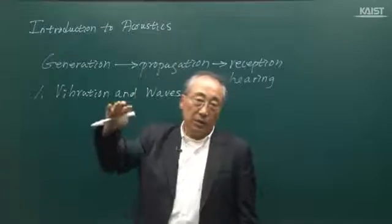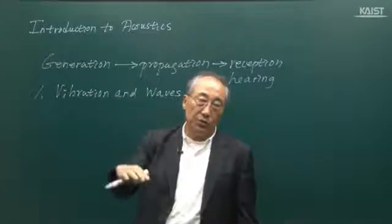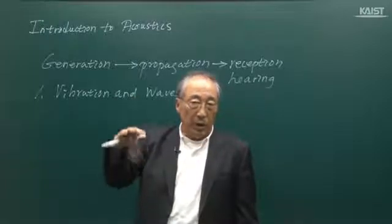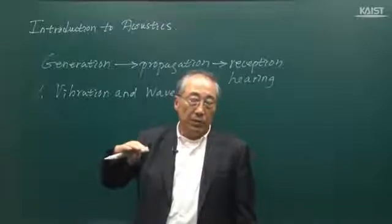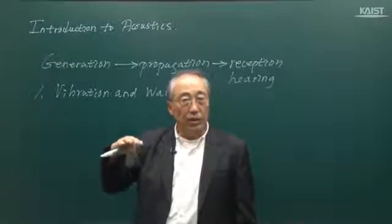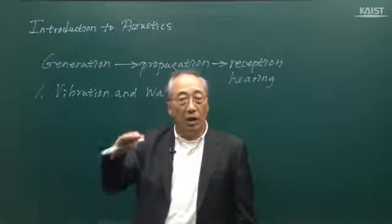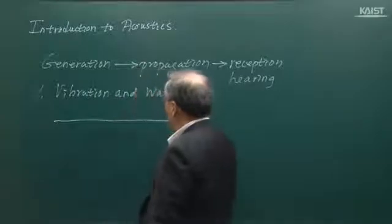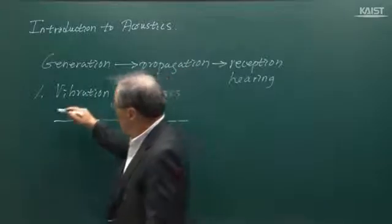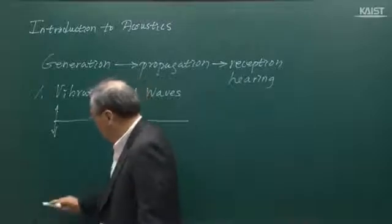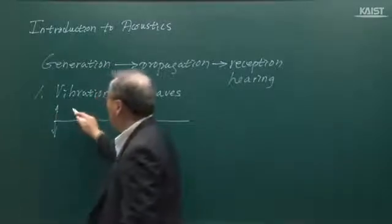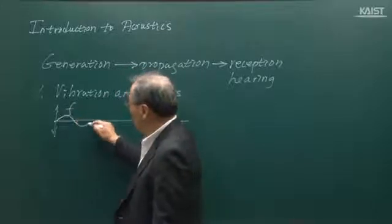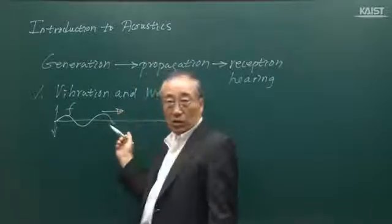Vibration is something oscillating with a certain period of time. As you can see here, when I oscillate this more rapidly, then the frequency will increase. That's the very typical measure of time fluctuation in vibration. But if you have a string like this, and if I oscillate this string with a certain frequency f, then a wave will be generated and propagate in this direction.